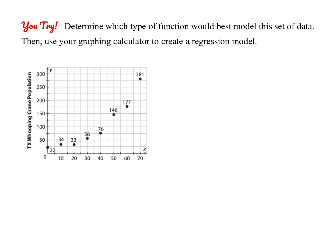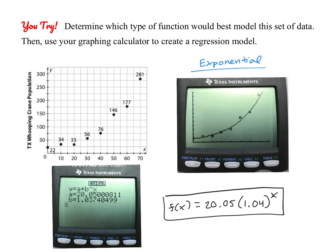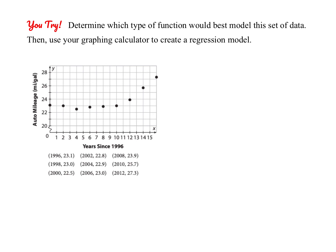Pause the video again and give this next one a try on your own. By looking at the scatter plot, it looks like this would be best modeled with an exponential function. After plotting and running the regression, here's the graph of that regression model — it's a pretty good fit — and here are the rounded A and B values.